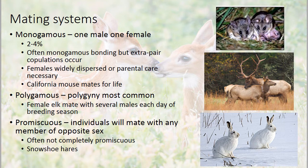Monogamy usually occurs when either females are widely dispersed, so they're not as easy to find, or when lots of parental care is necessary. There are some examples of monogamy in class Mammalia — the California mouse mates for life, so that's one strong example.